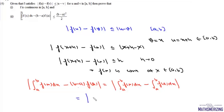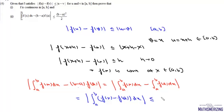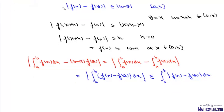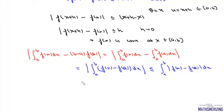This can be expressed as the modulus of the integral from a to b of [f(x) - f(a)]dx, which is less than or equal to the integral from a to b of |f(x) - f(a)|dx. Using the given condition |f(u) - f(v)| ≤ |u - v|, this is less than or equal to the integral from a to b of |x - a|dx.